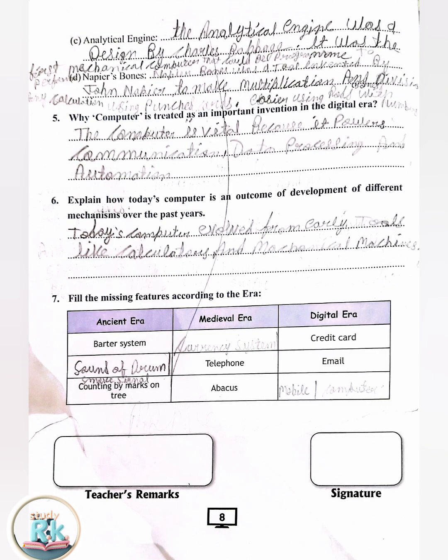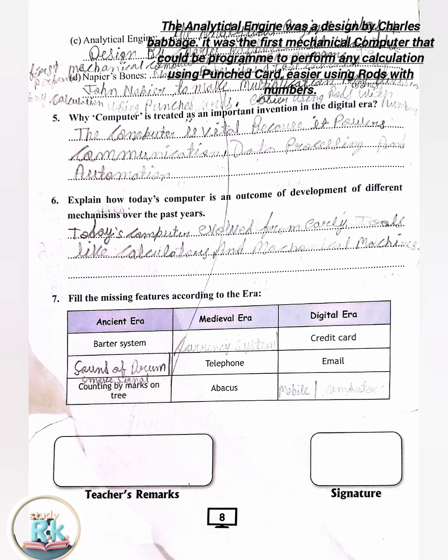C. Analytical engine. The analytical engine was a design by Charles Babbage. It was the first mechanical computer that could be programmed to perform any calculation.